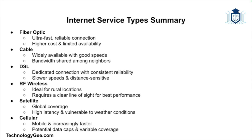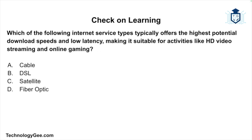To summarize: each internet service type has unique advantages and drawbacks. Fiber optic is ultra-fast and reliable but limited by cost and availability. Cable is widely available with good speeds but bandwidth can be shared among neighbors. DSL offers dedicated connections but is slower and affected by distance. RF wireless is good for rural areas but requires a clear line of sight. Satellite offers global reach but is susceptible to high latency and weather. Cellular is good for mobility with improving speeds but may have data caps and coverage limitations. Understanding these differences is key for the CompTIA Tech+ certification exam.